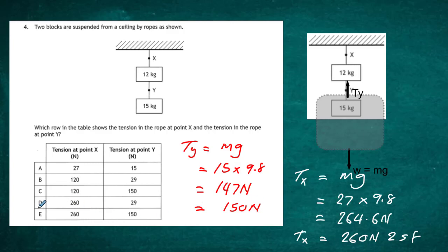Rounding 147 newtons to two significant figures gives 150 newtons. So the tension at point Y is 150 newtons and the tension at point X is 260 newtons, giving a final answer of 260 newtons at X and 150 newtons at Y.